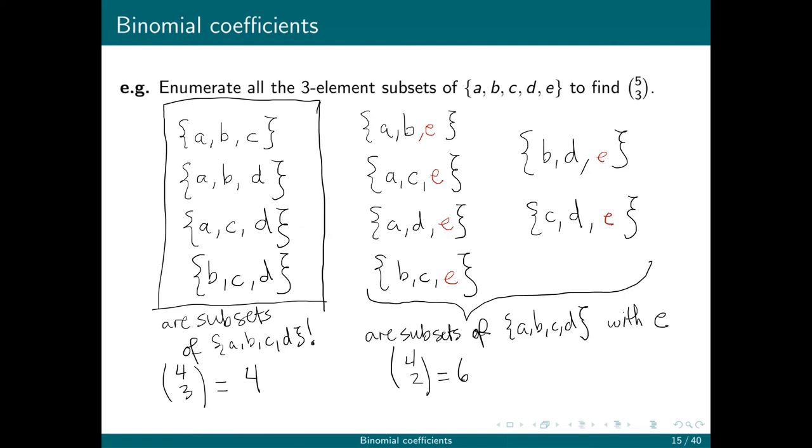Let's figure out what five choose three actually is. It's clear that it's 10. There's 1, 2, 3, 4, 5, 6, 7, 8, 9, 10 sets here. Let's see that the formula for five choose three gives us that. Five choose three is five factorial divided by three factorial two factorial. I can rewrite this as five times four times three factorial divided by three factorial two factorial. Two factorial is just two, and so that gives me 10.